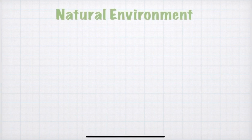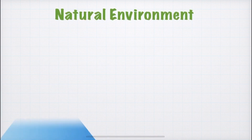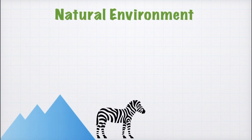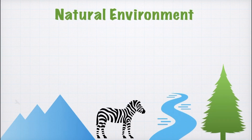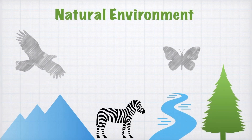Environment can be of two types: natural and manmade. Natural environment means the objects that are created by nature — for example, mountains, animals, water bodies, trees, insects, birds, and so on. These elements exist naturally; they do not exist because of humans.